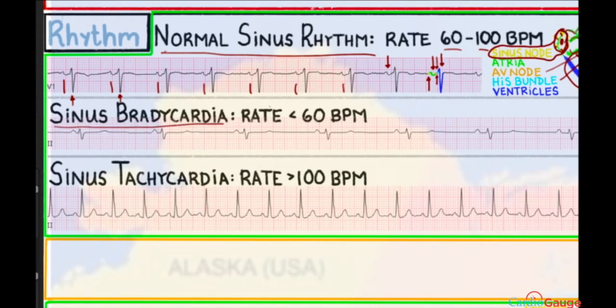Sinus bradycardia is just sinus rhythm with a rate less than 60 beats per minute — you can see this is a slow rate here, that's sinus bradycardia. Sinus tachycardia has a rate greater than 100 beats per minute. You can see the distance between QRS complexes is a little bit less than three boxes, so the rate is probably somewhere around 110 beats per minute in this one.